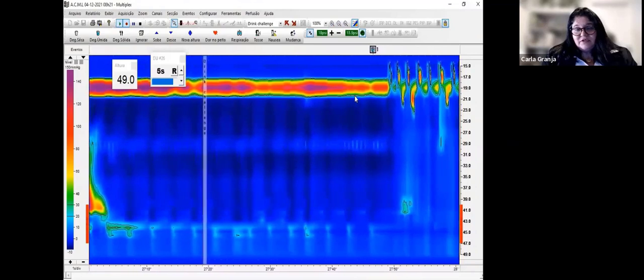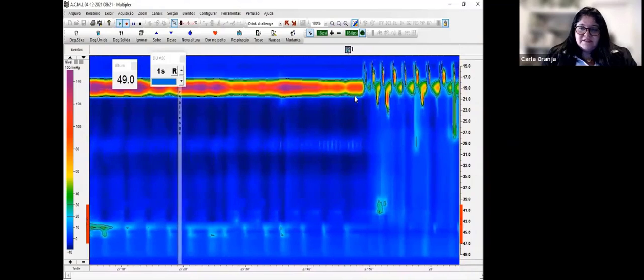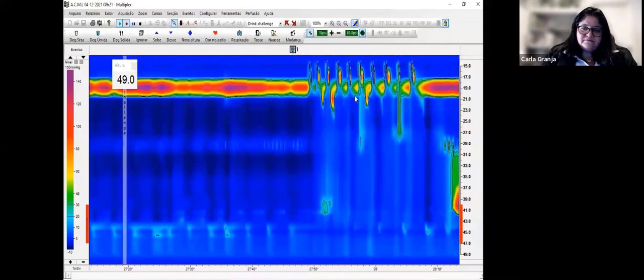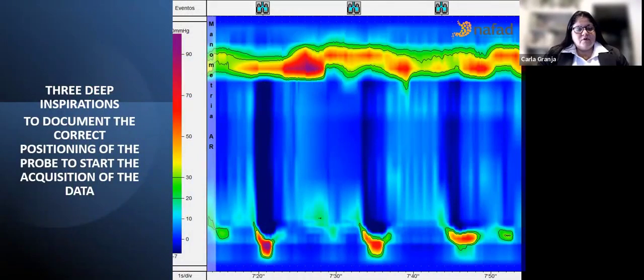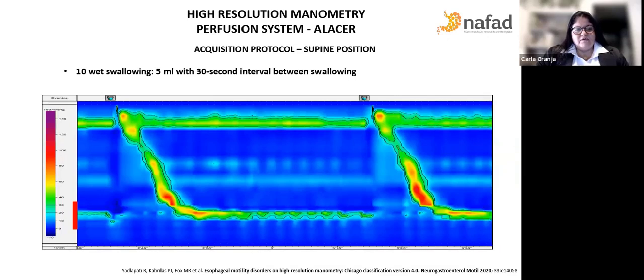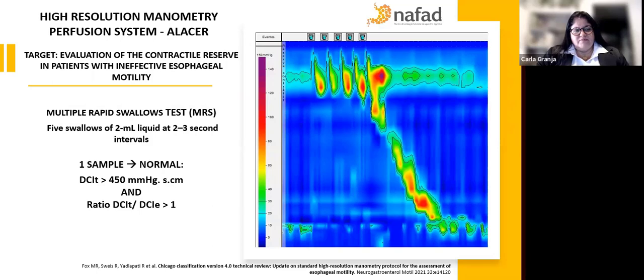As I said before, it's not magic. It's only mathematics and technological evolution of the software. We perform all the protocol proposed by the Chicago classification 4.0. We do three deep inspirations to document the correct position of the probe to start the acquisition of the data. We do the rest baseline 60 seconds for a baseline stabilization and collect the rest pressure. Then we do 10 wet swallows with 5 ml with 30-second interval between the swallows. And then we perform the multiple rapid swallows test to evaluate the contractile reserve.